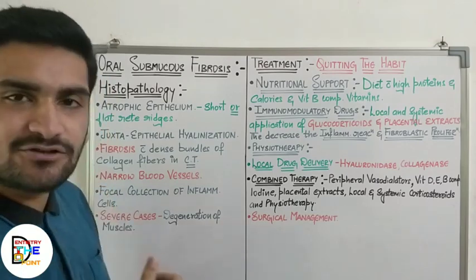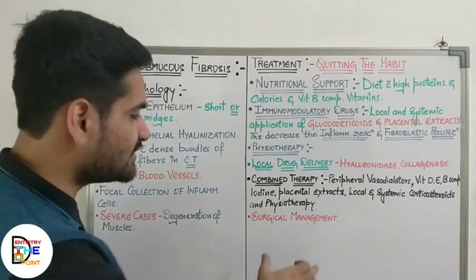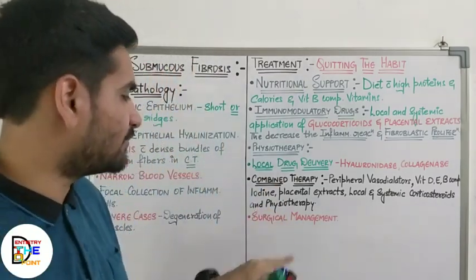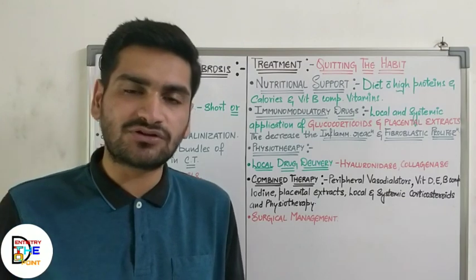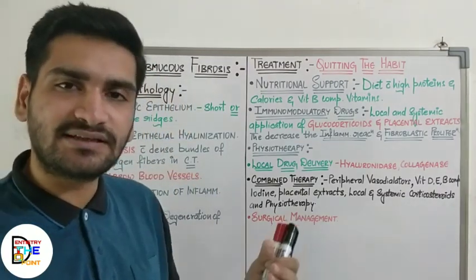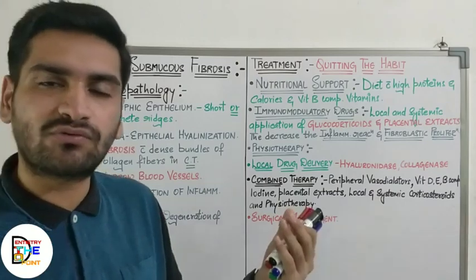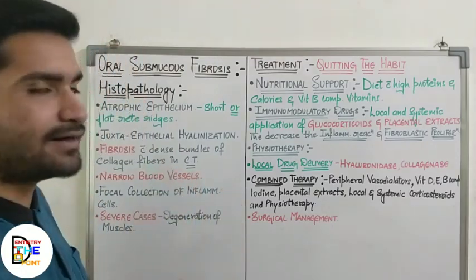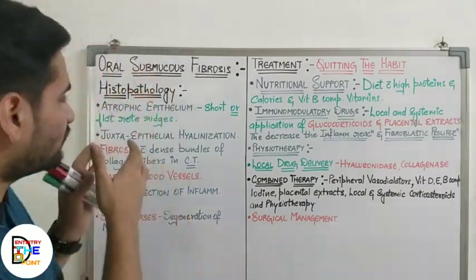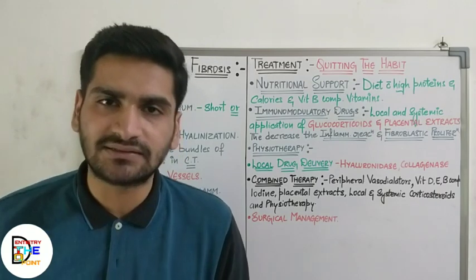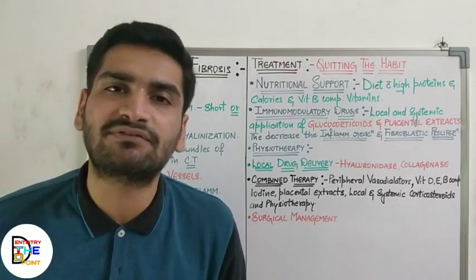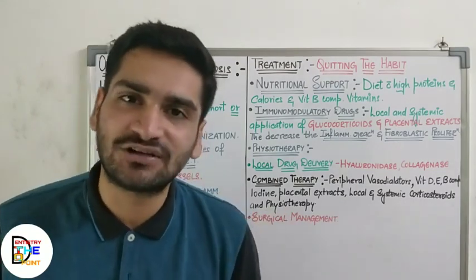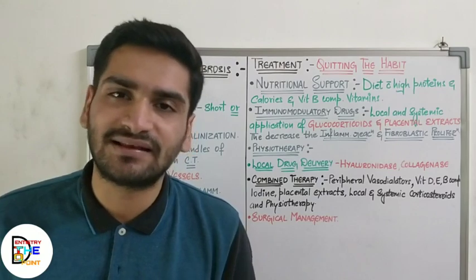Lastly, surgical management involves cutting the fibrotic bands and forcefully opening the mouth. However, this has not shown a very high success rate and is done only in more severe cases where the patient is unable to quit the habit. This concludes the treatment of oral submucous fibrosis along with histological features. Please like, share, and subscribe to the channel and hit the bell icon for regular lecture updates.